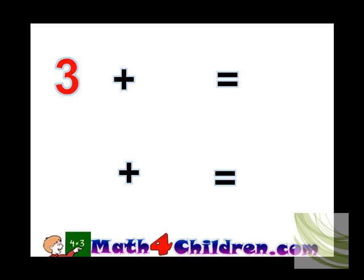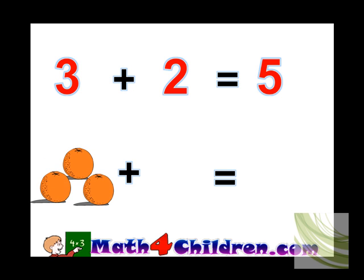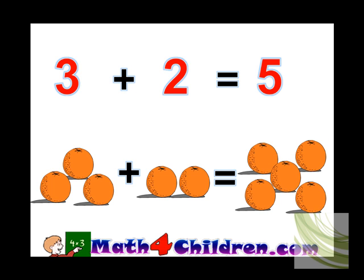3 plus 2 equals 5. 3 mangoes plus 2 mangoes equals 5 mangoes.